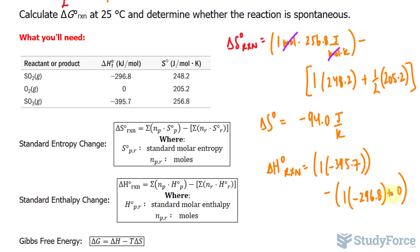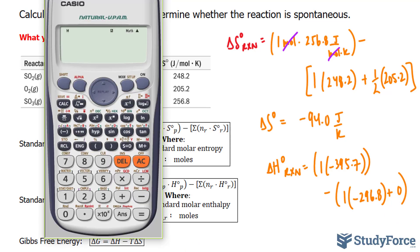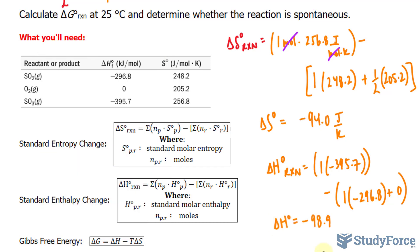We don't even need to multiply it by half because anything times 0 is nothing. Using our calculator again, negative 395.7 minus negative 296.8, close bracket, and we get a delta H of negative 98.9, and this is in kilojoules per mole.